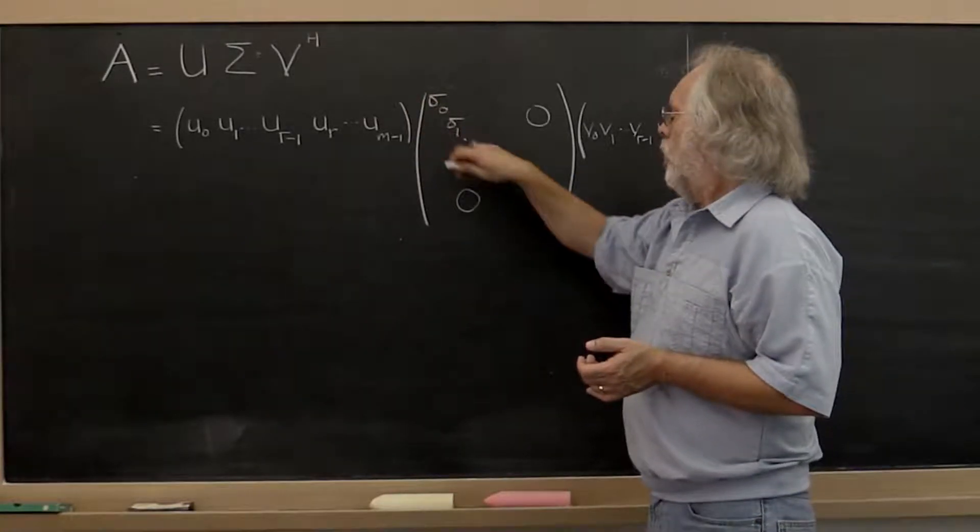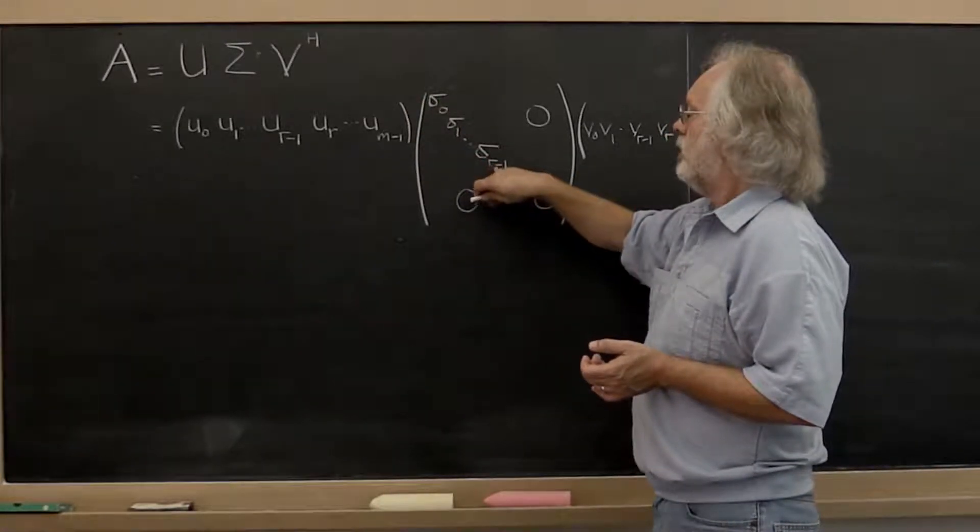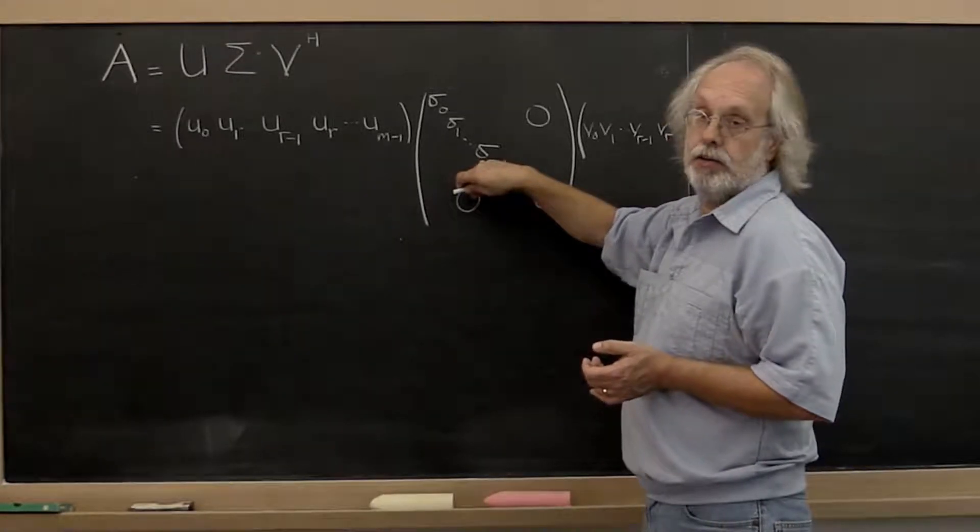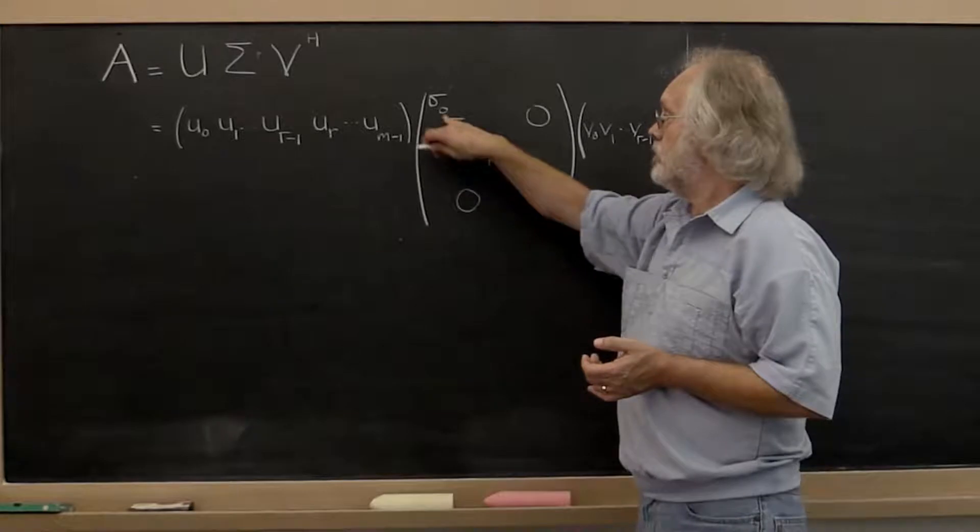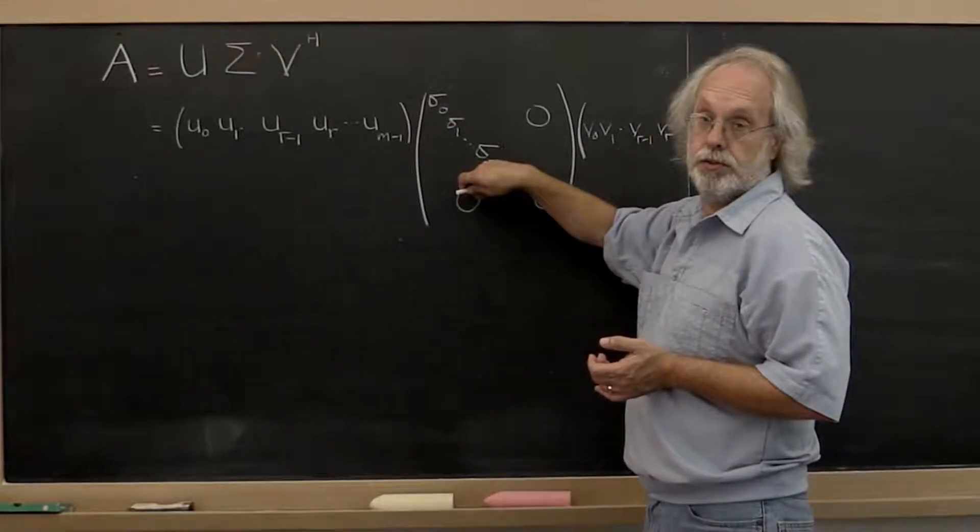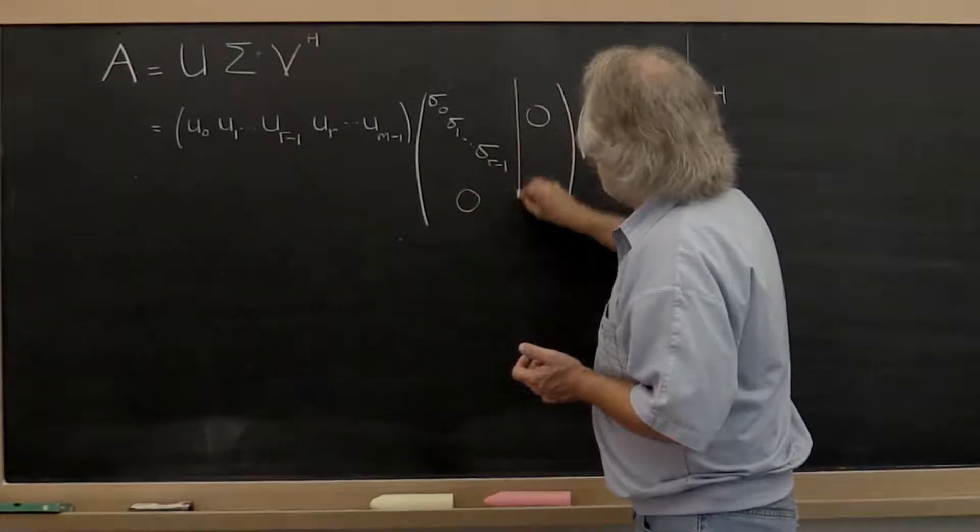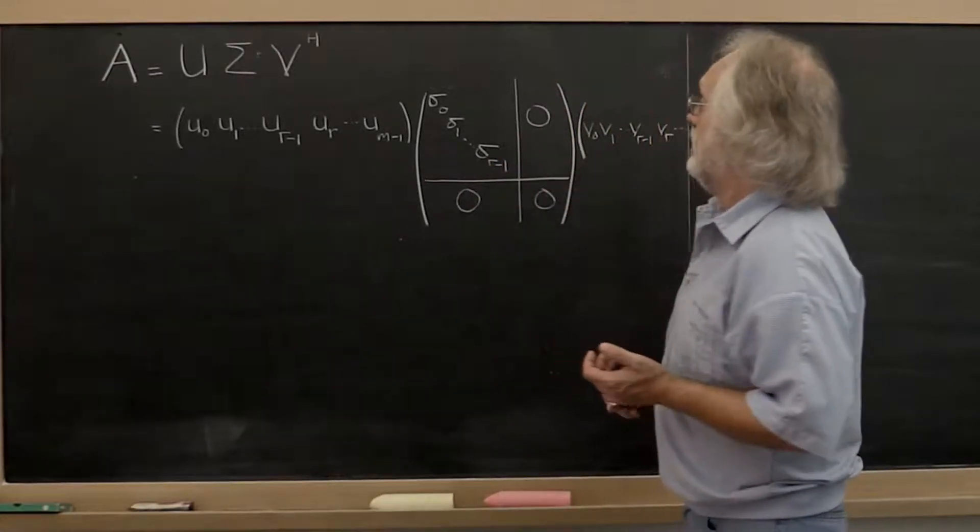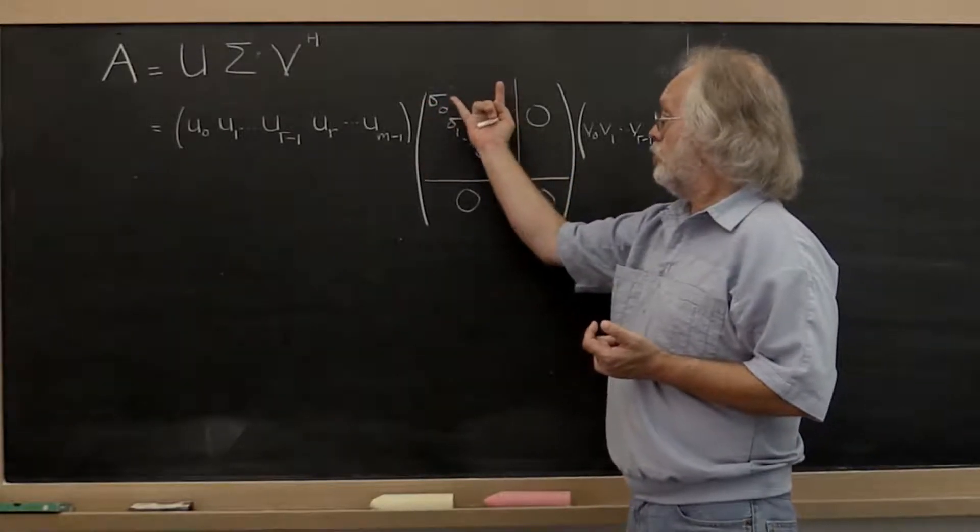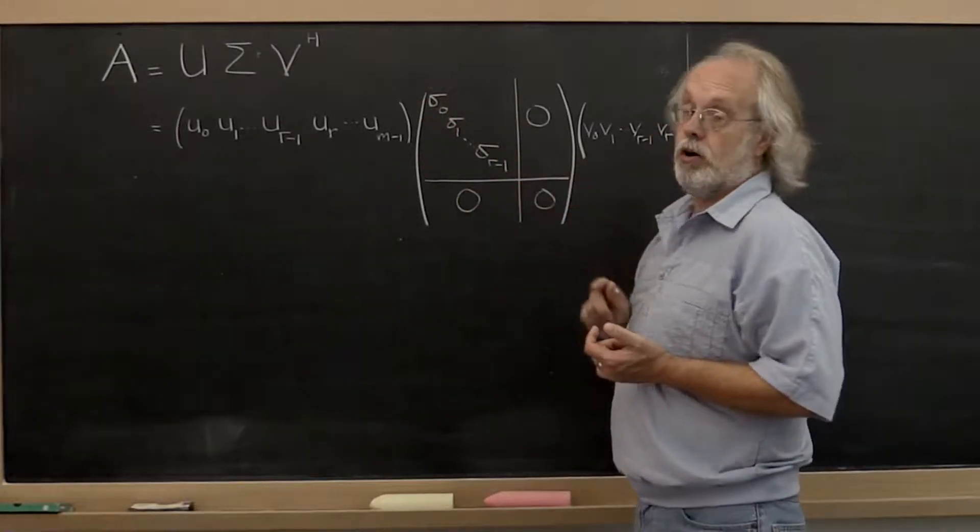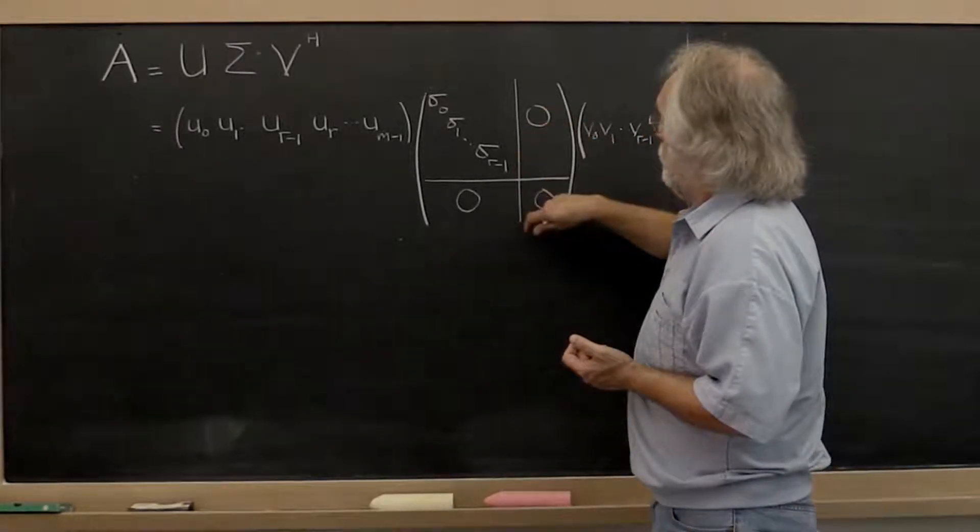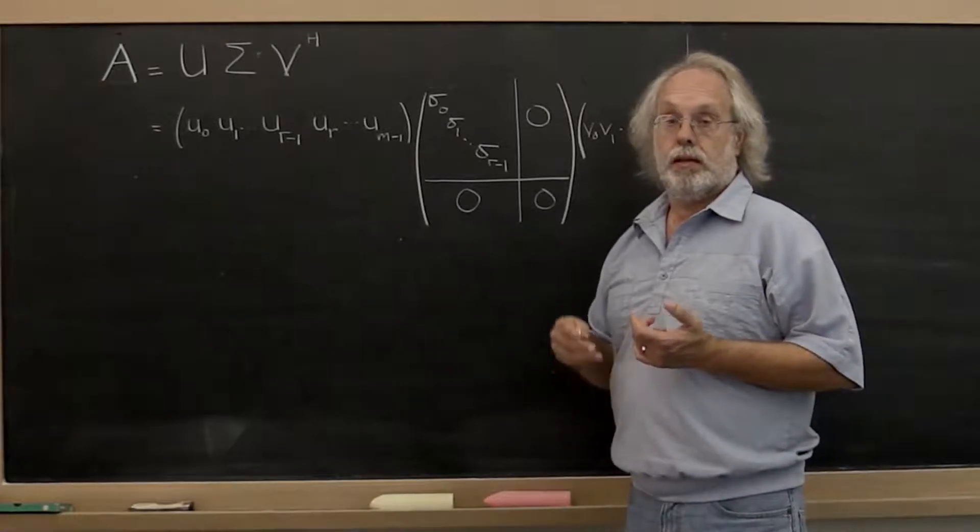Well, what if sigma r minus 1 is the first nonzero entry on the diagonal of sigma? In other words, we have r nonzero singular values. Then if we partition the diagonal matrix like this, this allows us to nicely capture a true diagonal matrix that's r by r, square, and a bunch of regions that have zeros in them.